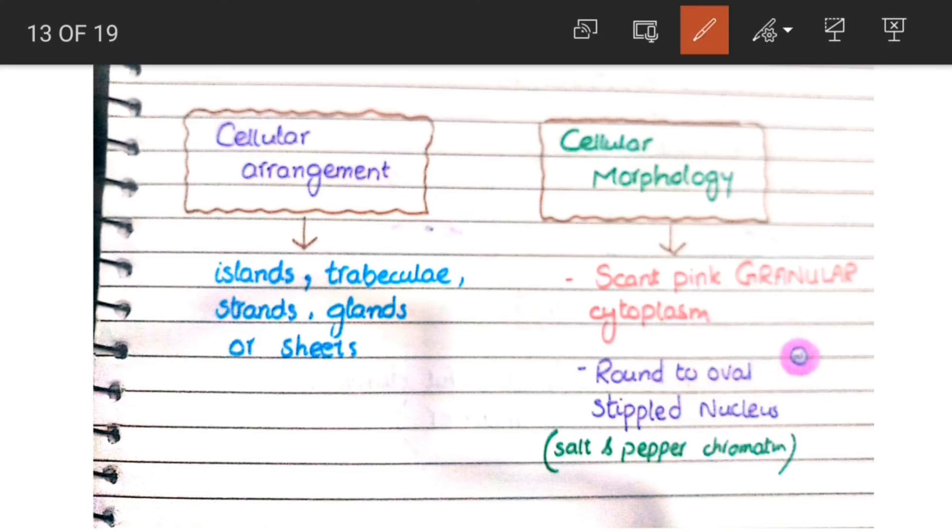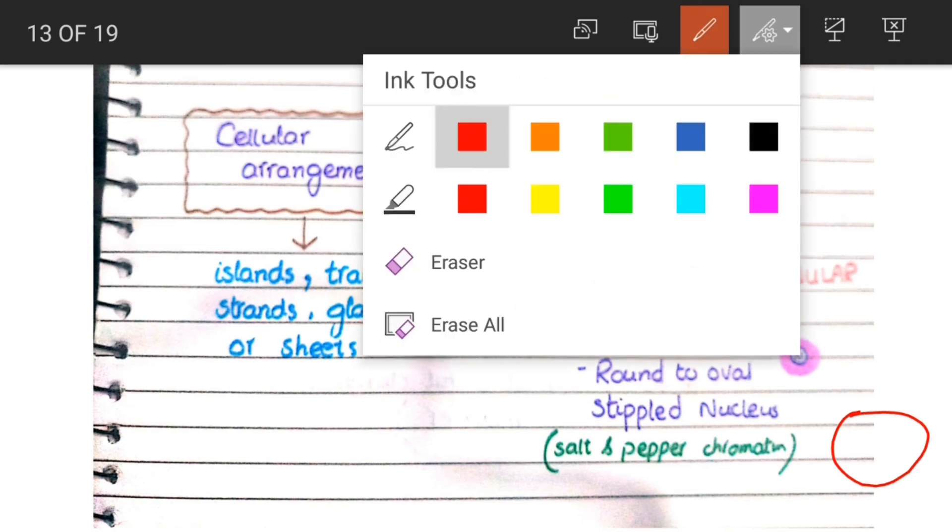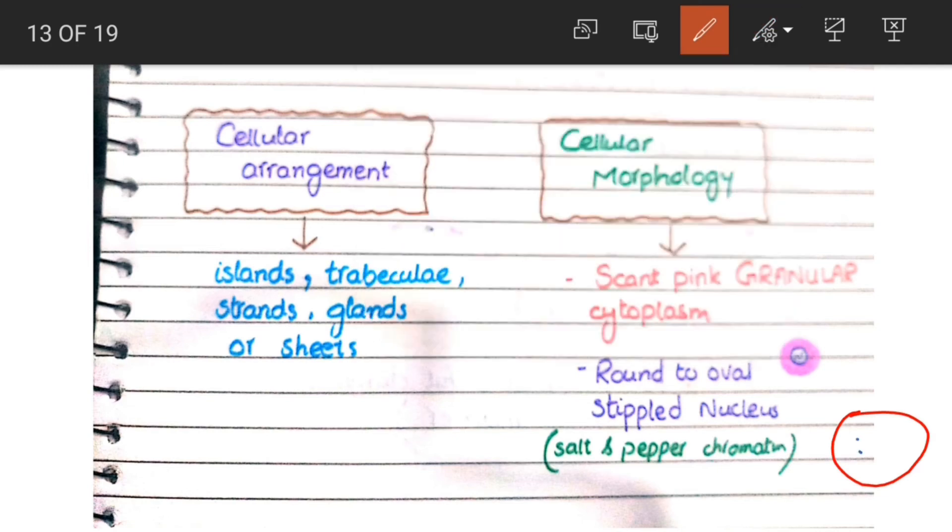For example, if this is a nucleus, then inside the nucleus there is stippling or a stippled appearance. This stippled appearance is also known as salt and pepper chromatin, which is characteristic of neuroendocrine tumors.